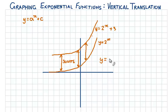If we want to graph the expression y equals 2 to the power of x minus 3, we have to shift each point down 3 units.